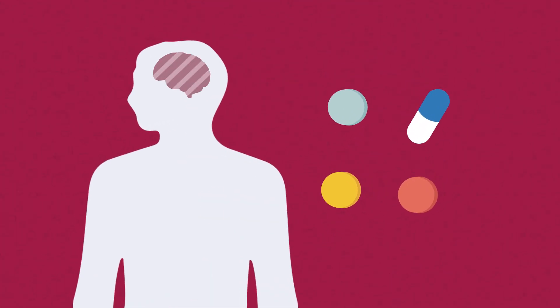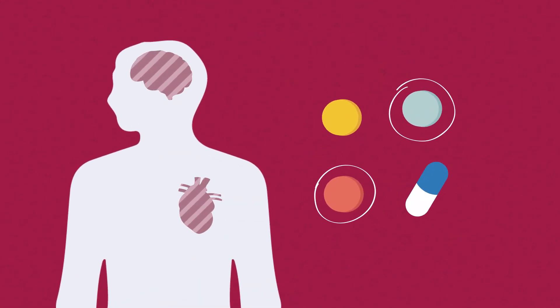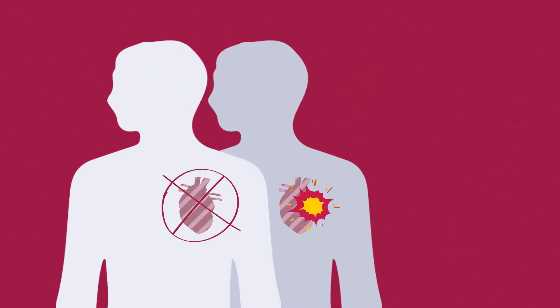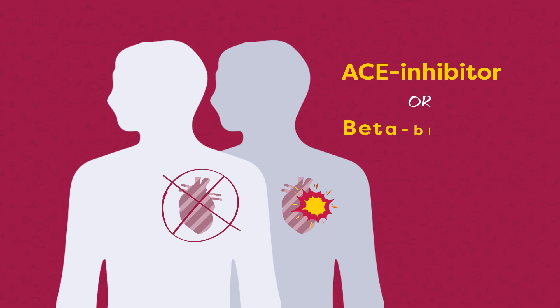When patients have other medical conditions, specific antihypertensives may be preferred. For example, when a patient has heart failure or already had a heart attack, choose an ACE inhibitor or beta blocker.